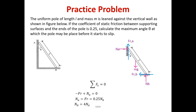Let us try to solve a practice problem of ladder friction. A uniform pole of length L and mass m is leaned against a vertical wall as shown. The coefficient of static friction between the supporting surfaces and the ends of the pole is 0.25 for all contact surfaces. Calculate the maximum angle theta at which the pole may be placed before it starts to slip. The first step is to draw the FBD.